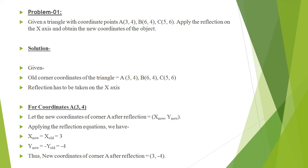We apply reflection on the x-axis for vertex A, whose original coordinate is (3, 4). We calculate x-new and y-new: x-new equals x-old, so the x value remains 3. The y-new equals minus y-old, so y-new equals minus 4. Therefore the new coordinate for vertex A is (3, -4).